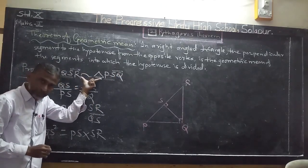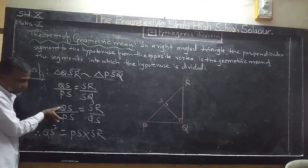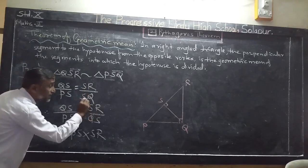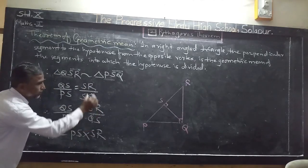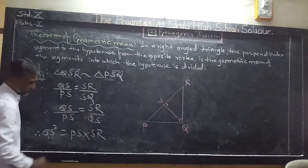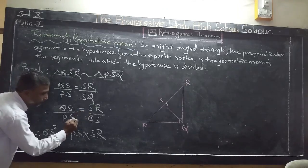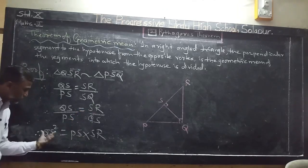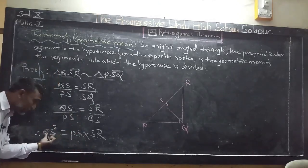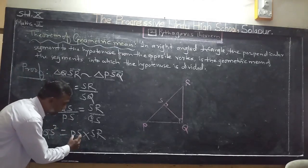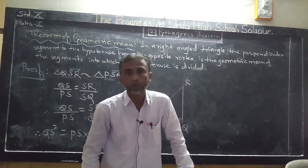From QS/PS = SR/QS, doing cross multiplication: QS × QS = PS × SR, which gives QS² = PS × SR. This means QS is the geometric mean of the two segments PS and SR. In this way the theorem of geometric mean is proved.